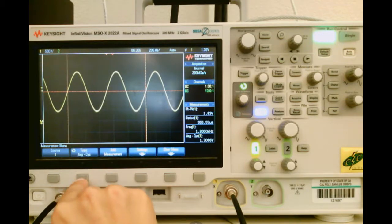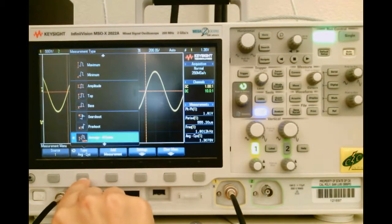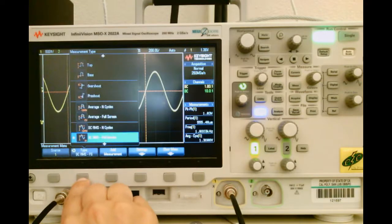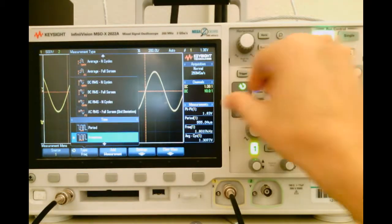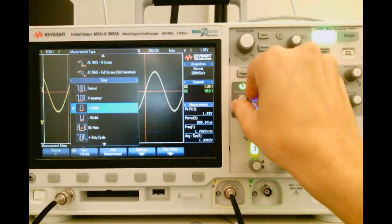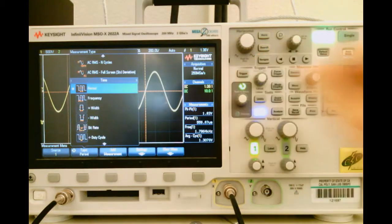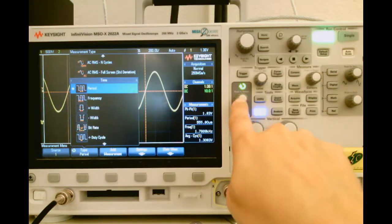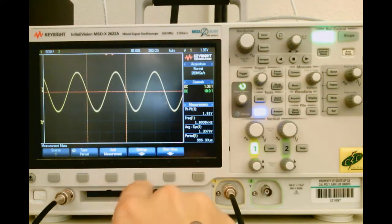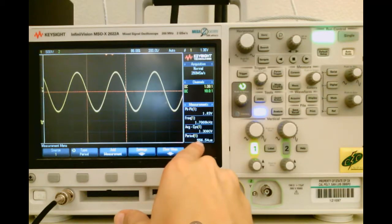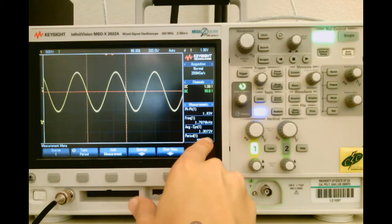Now the type of measurement we want, let's say we want the period. So you push the menu, and then you can push this button to cycle through the different types, or you can move this knob, and we'll go ahead and first get the period. So when you've selected the one you want, you just push the button, and there the period will show up. It's 555 microseconds, which is very similar to what we had measured with the cursors.